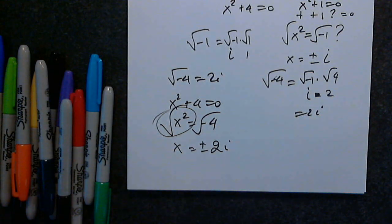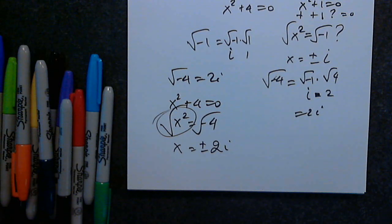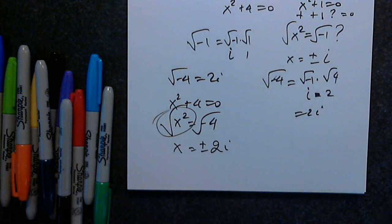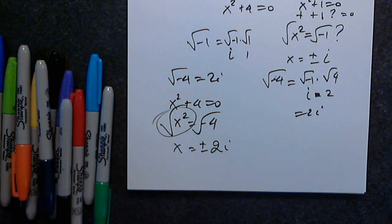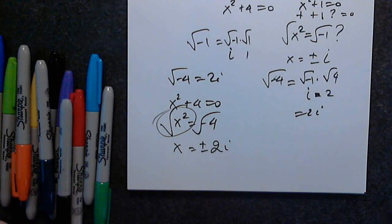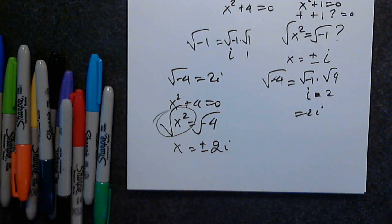My second question is: when we factor by grouping, in order to get the right pairings, is it true that the ratio between the coefficients should be the same - the coefficient of the first term and the second term, and the third and the fourth? Yes, I would say yes. It's because otherwise I will not have the common factor in both pairs.